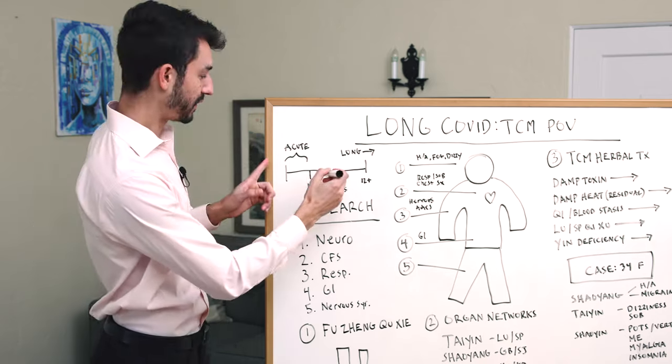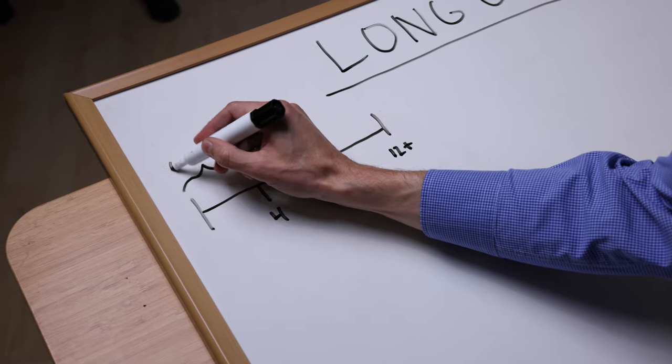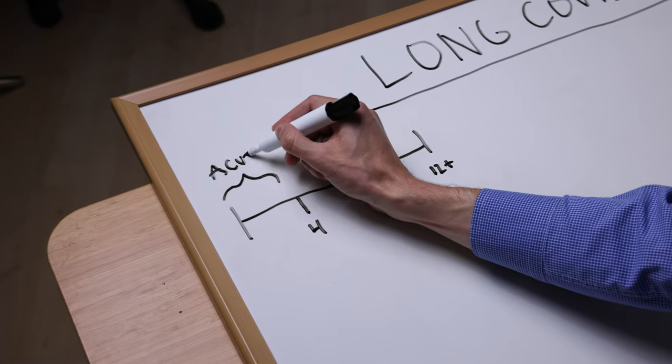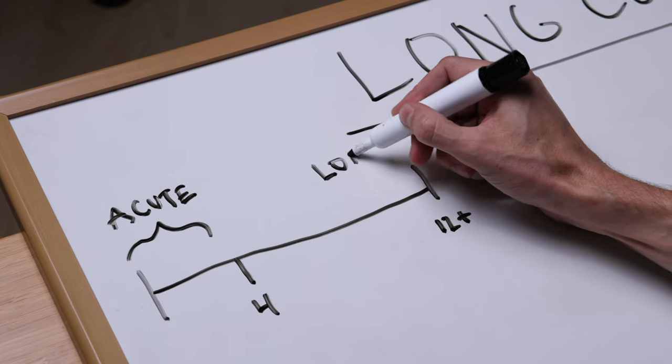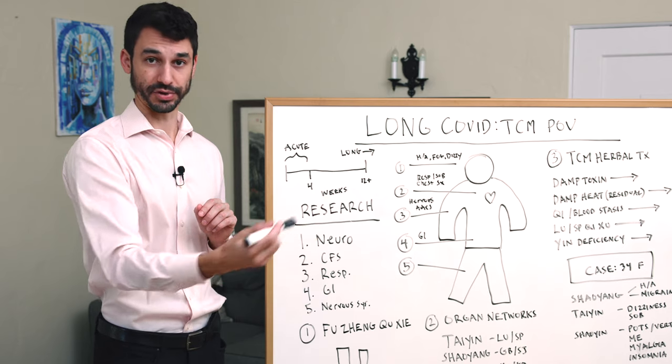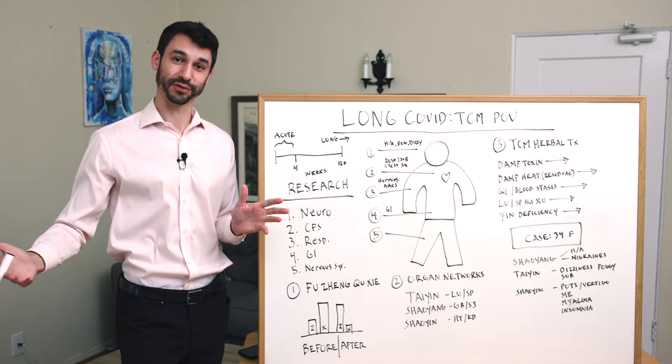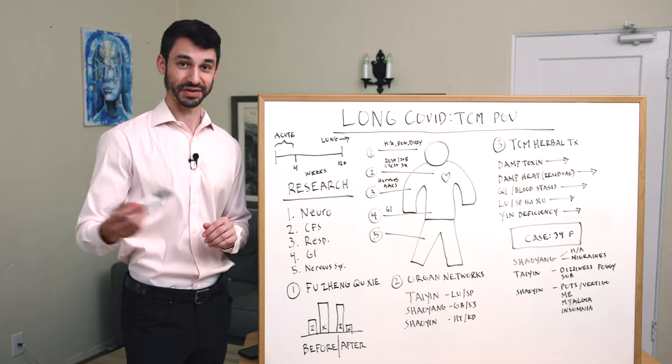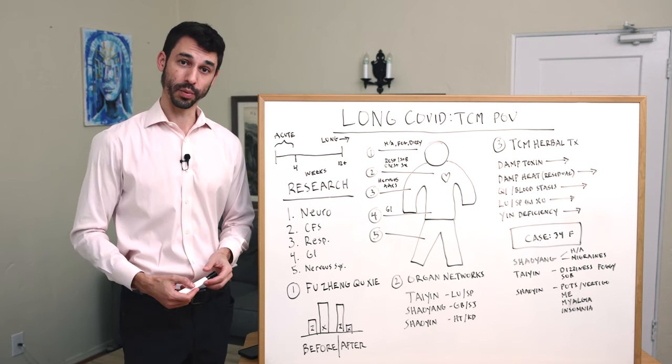When you look at the literature, the acute phase of COVID is generally accepted to be about four weeks, and then Long COVID begins. After 12 weeks, which is three months, you're still not really doing any better and those symptoms are lingering. Obviously, if you get a cold or flu and three months later you're still feeling the same symptoms, that's more than a little bit worrying.